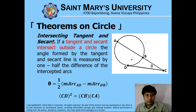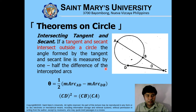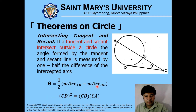For intersecting tangent and secant — if a tangent line and a secant line intersect outside the circle, the angle formed is measured by one half the difference of the intercepted arcs. To find one of the line segments — BD, CD, BC, or AC — apply the relationship: CD squared is equivalent to CB multiplied by CA.